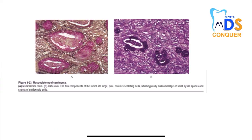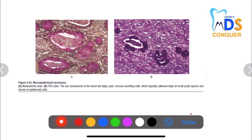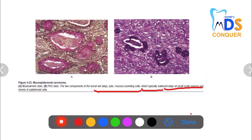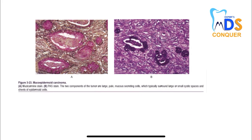Next is mucoepidermoid carcinoma. There are large pale mucus-secreting cells that typically surround large or small cystic spaces, and sheets of epidermoid cells. There are mucus cells and epidermoid cells — hence mucoepidermoid. This is a classic picture of mucoepidermoid carcinoma.